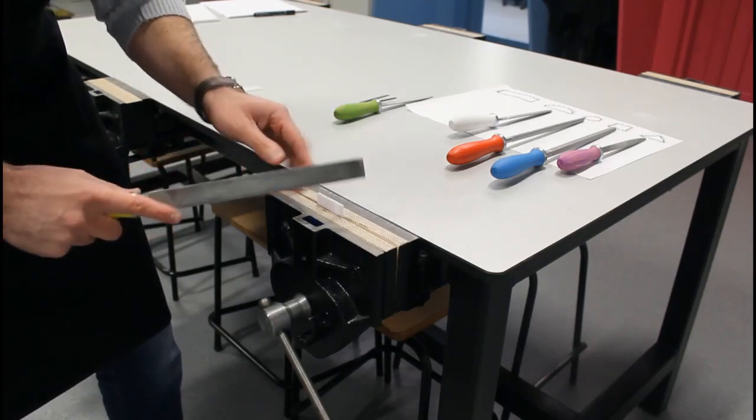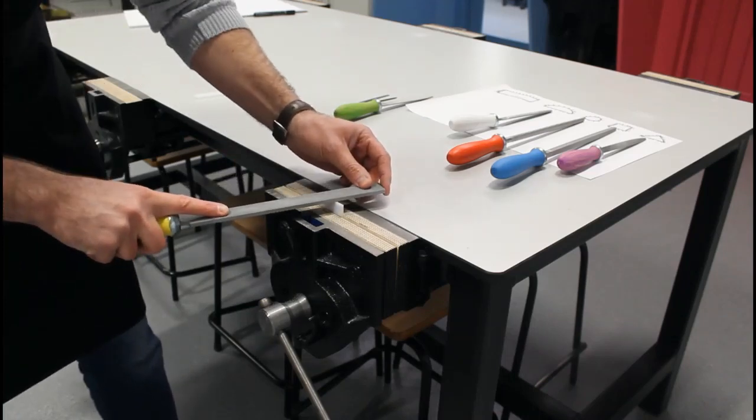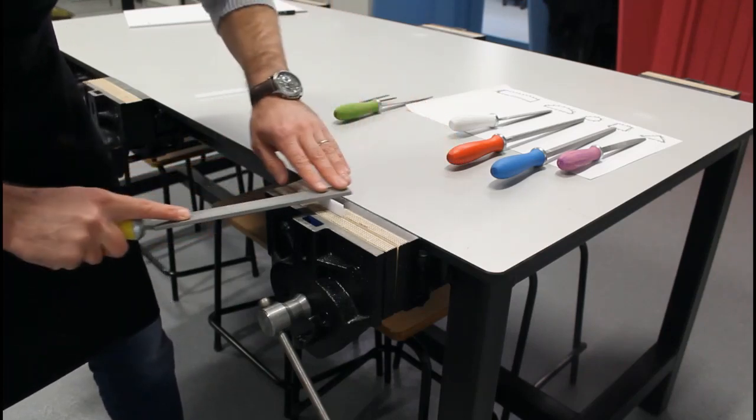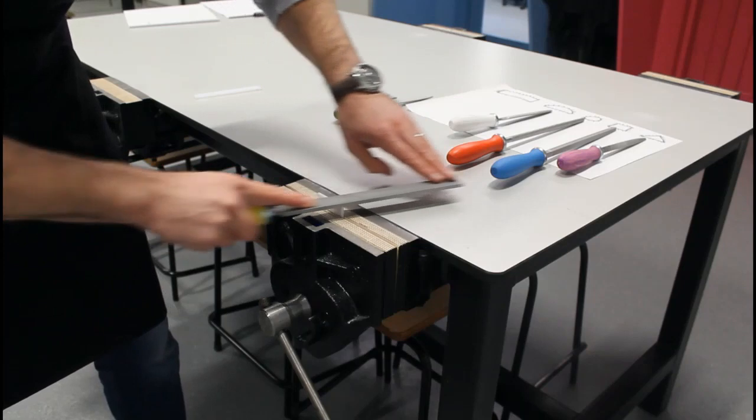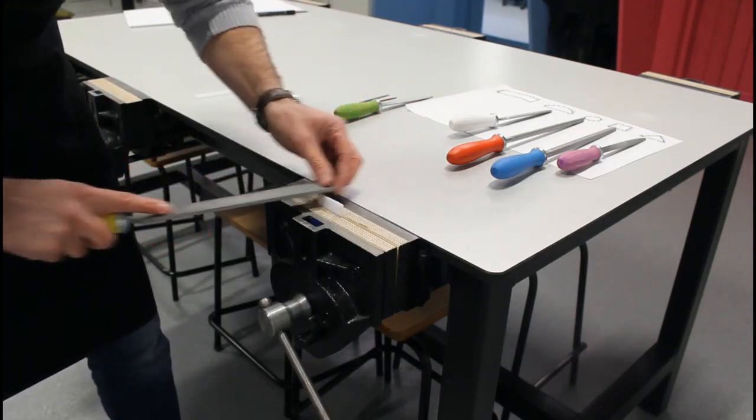Again, the files are used for waste removal. So as we're filing, this is called cross filing, we're going across the material. So filing across the material and working across the material. Then checking to see if you're at your line.